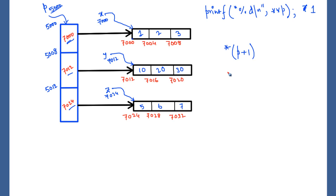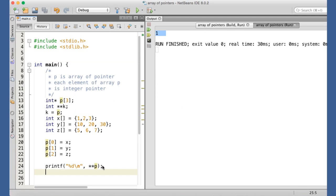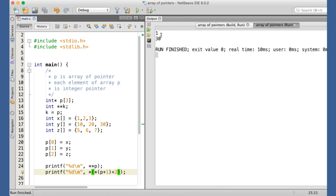*(P+1) gives us 7012, the content of address 5008. Now 7012 is an integer pointer, so adding 2 moves us to 7020 (since each integer is 4 bytes, +2 = +8 bytes). Dereferencing 7020 gives us 30. So the expression *(*(P+1)+2) prints 30. Running the program confirms this — the output is 30.